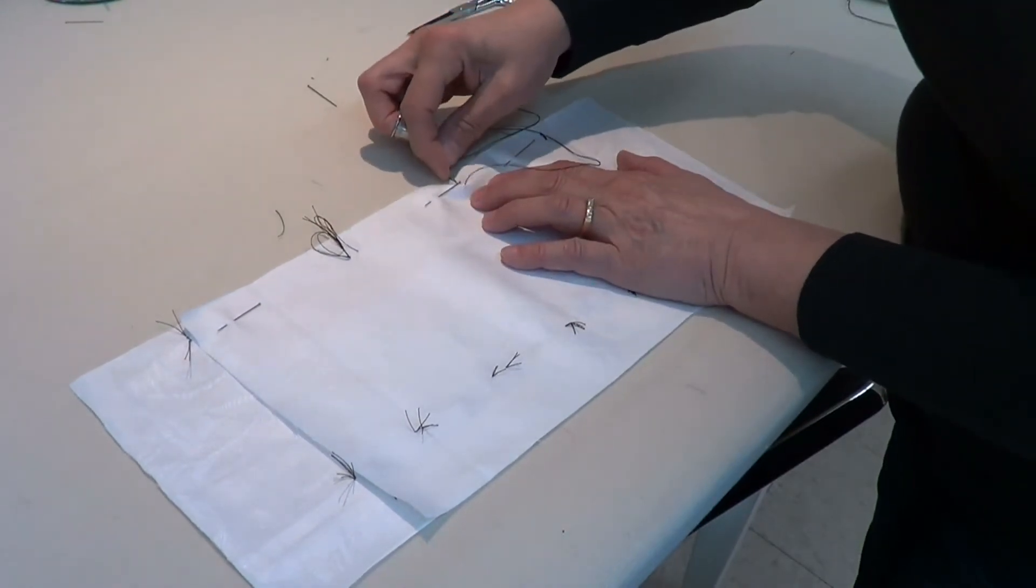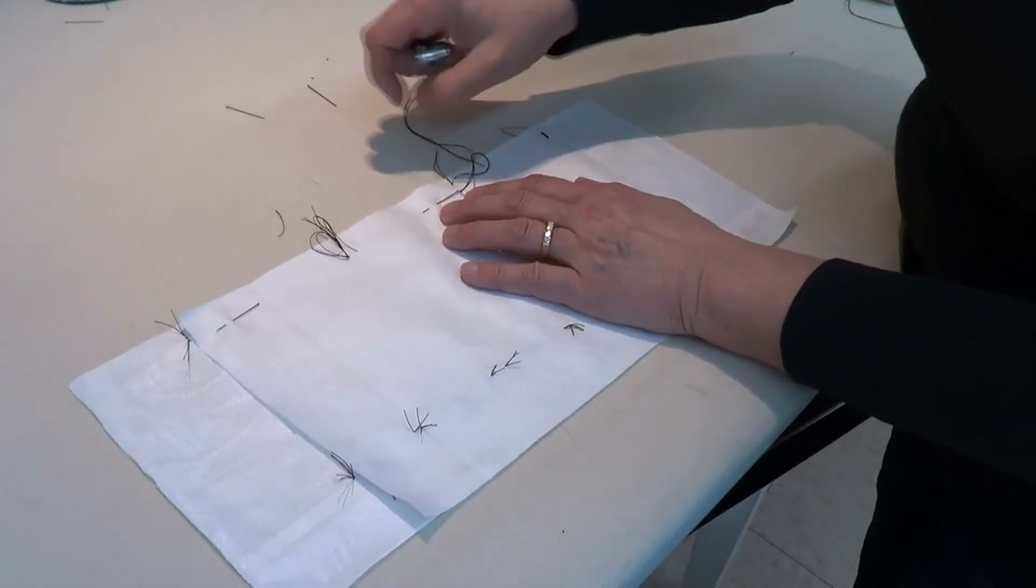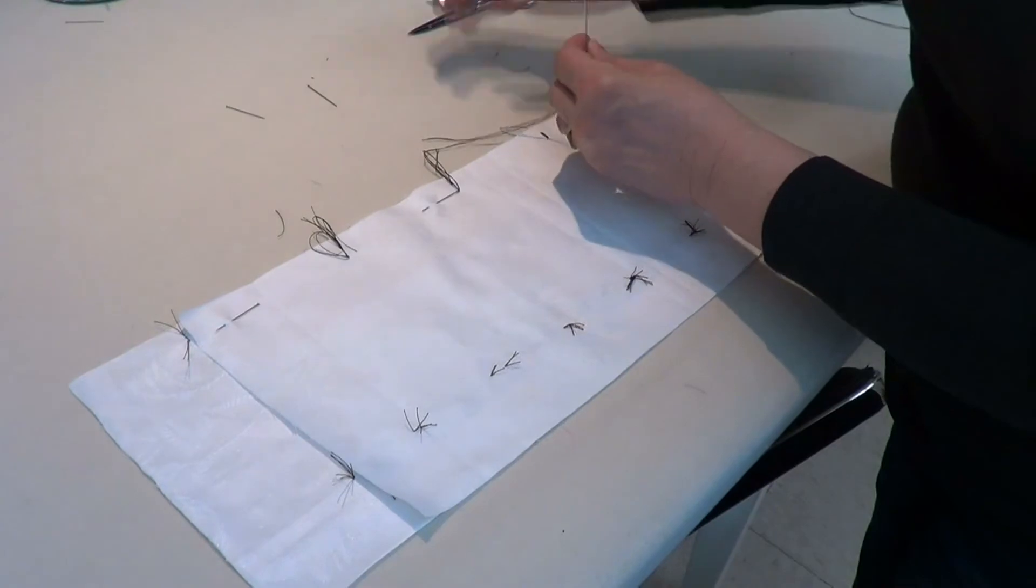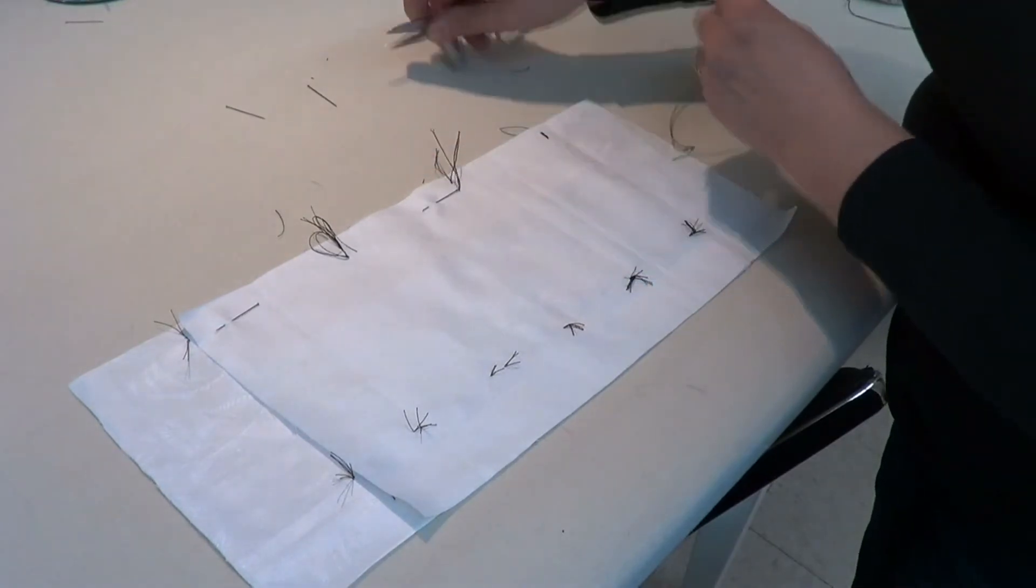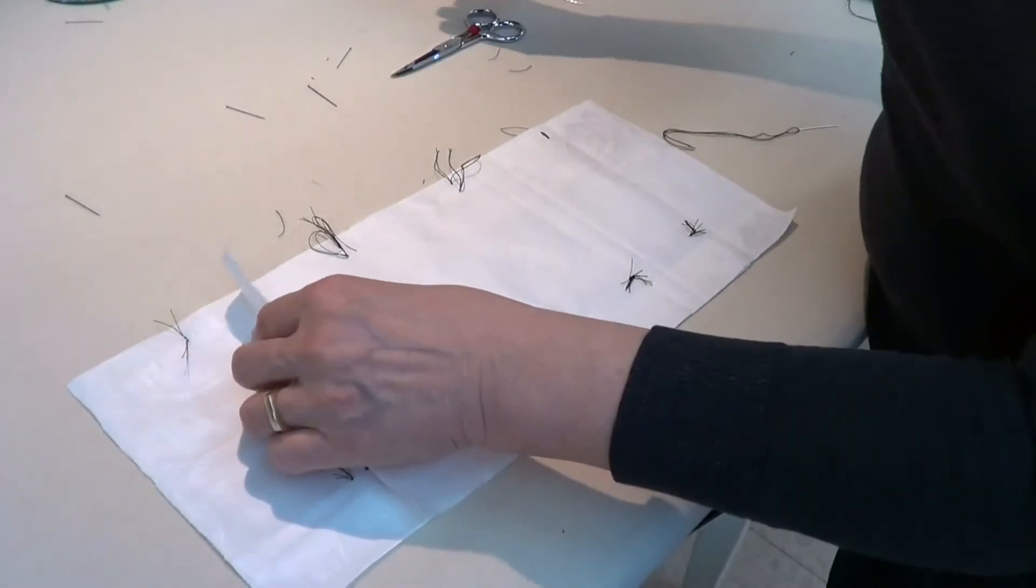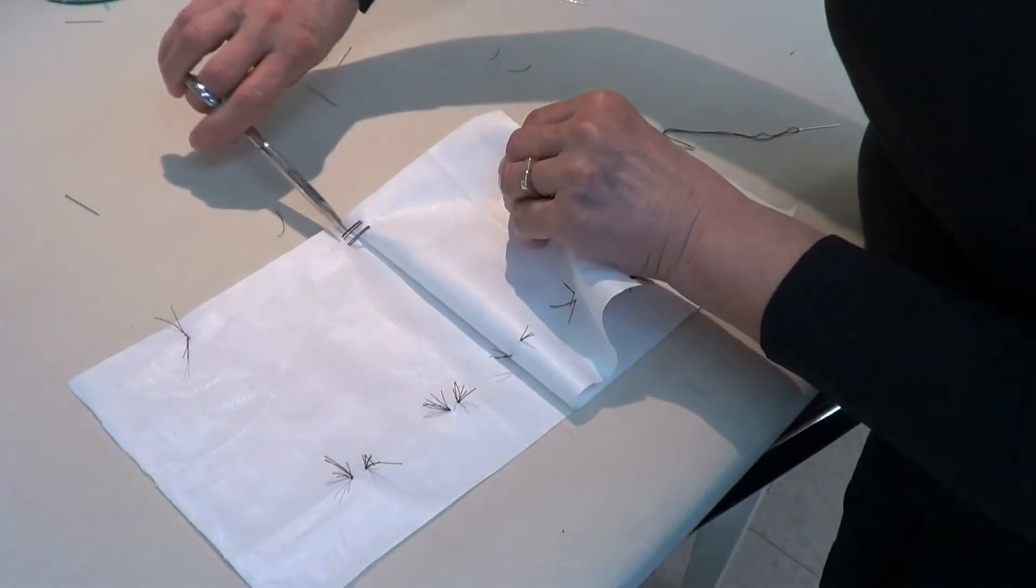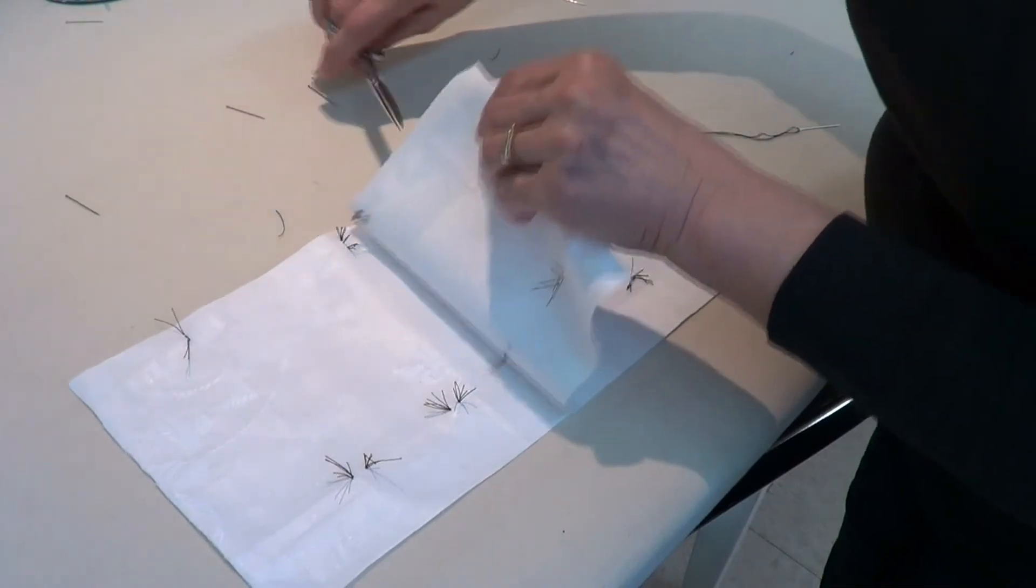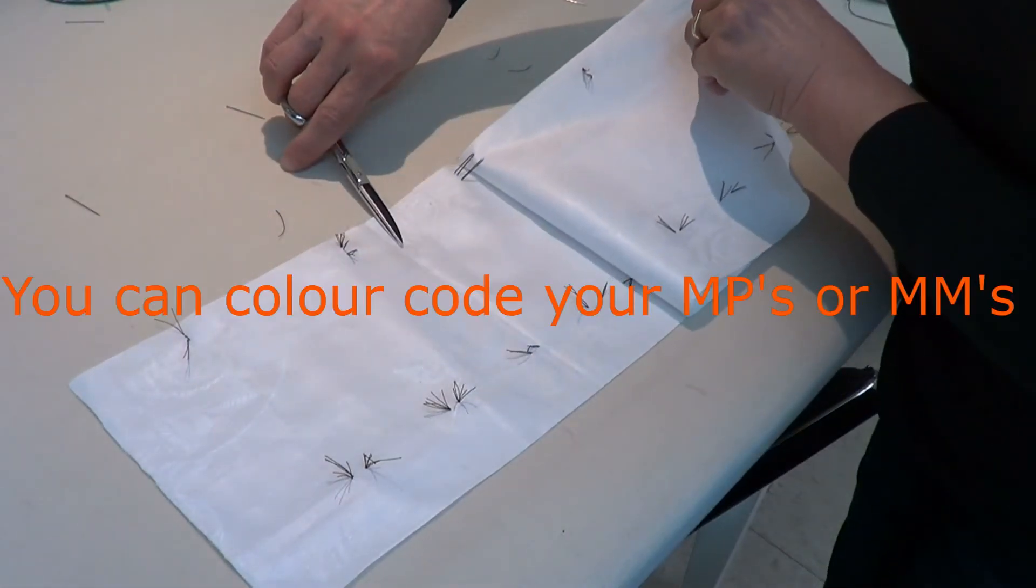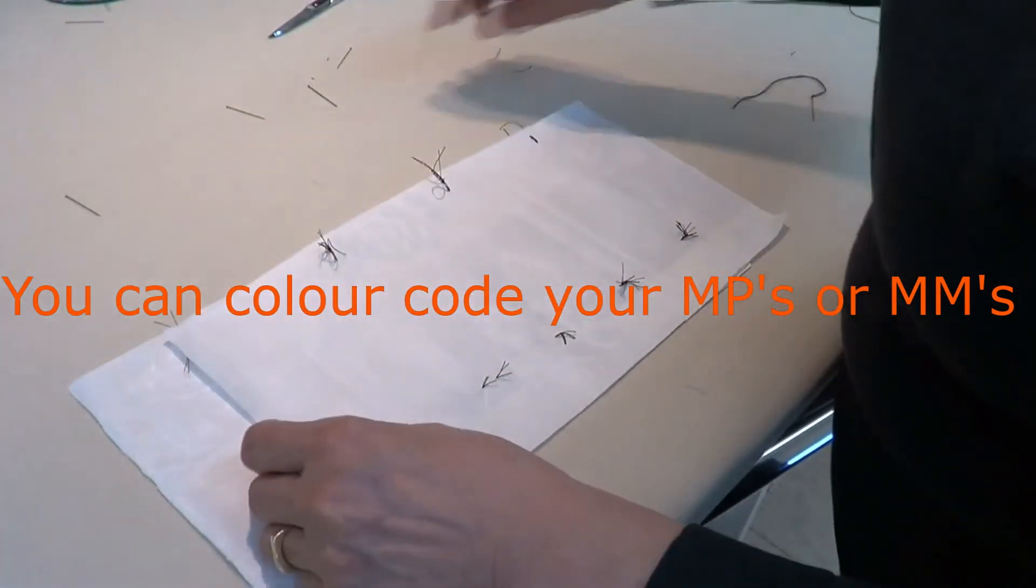And backstitch, but leave length between. And don't pull those loops quite tight. Now I can remove my pins and I can do the same thing as I did before with my tailor's tacks. And there are my meeting points or match points.